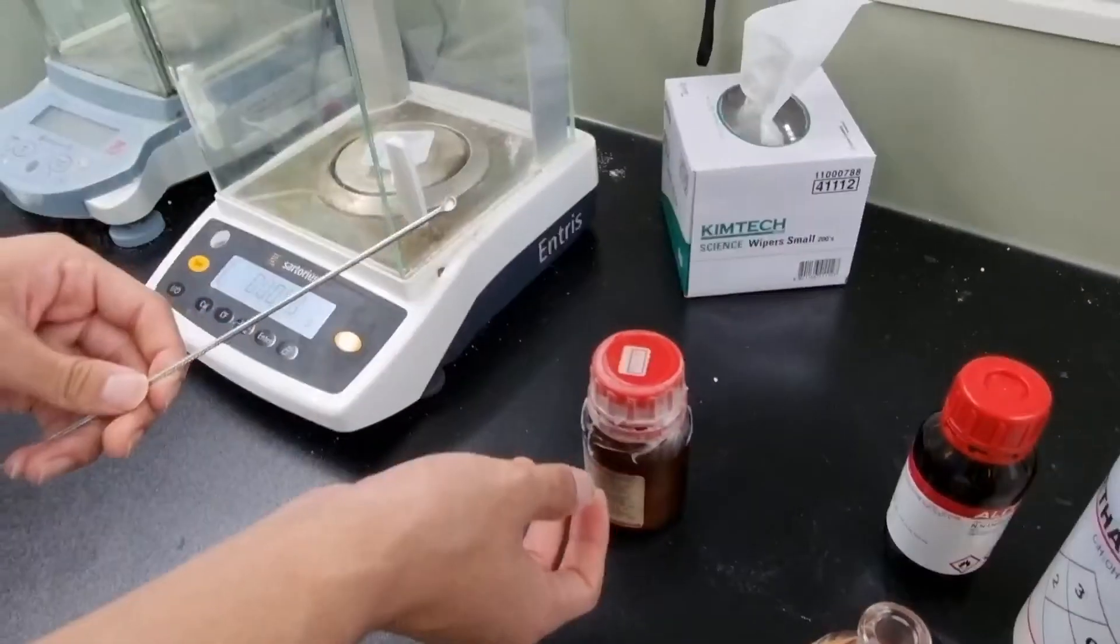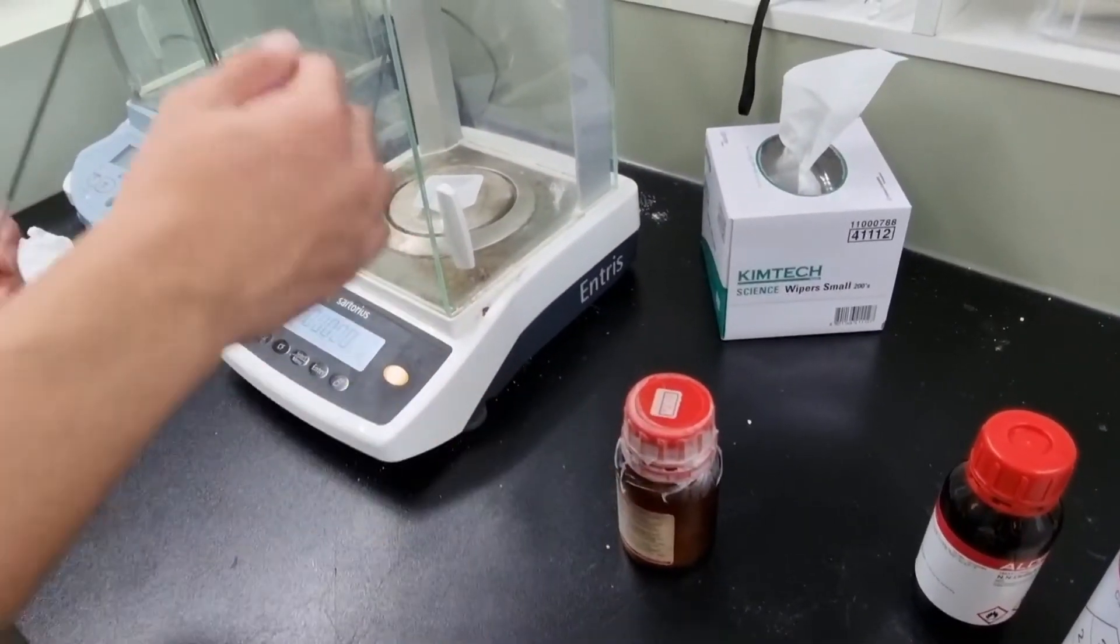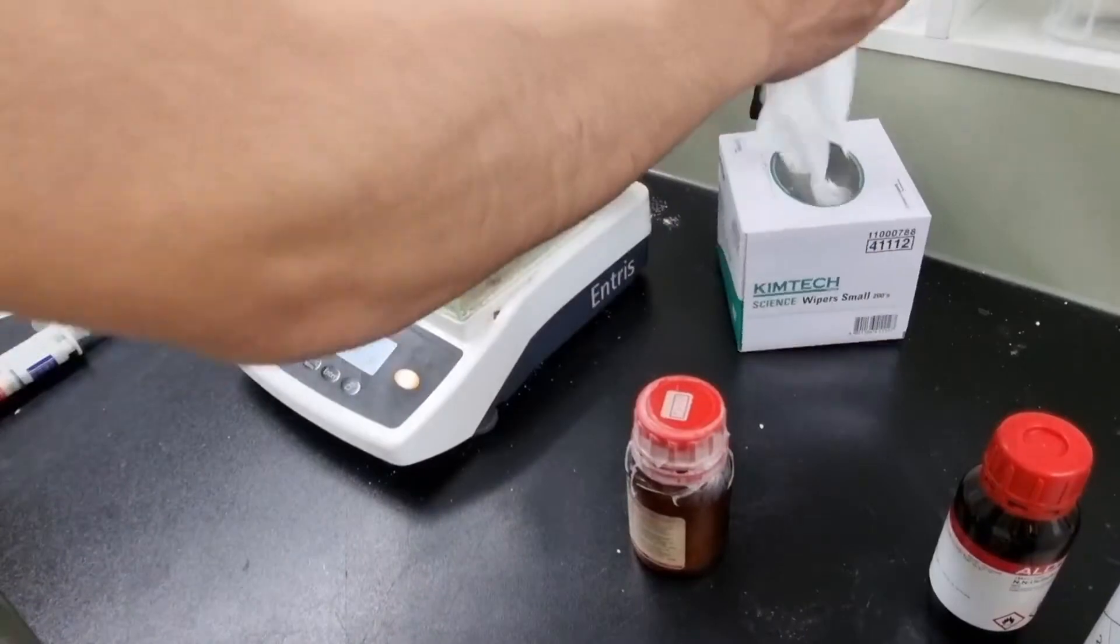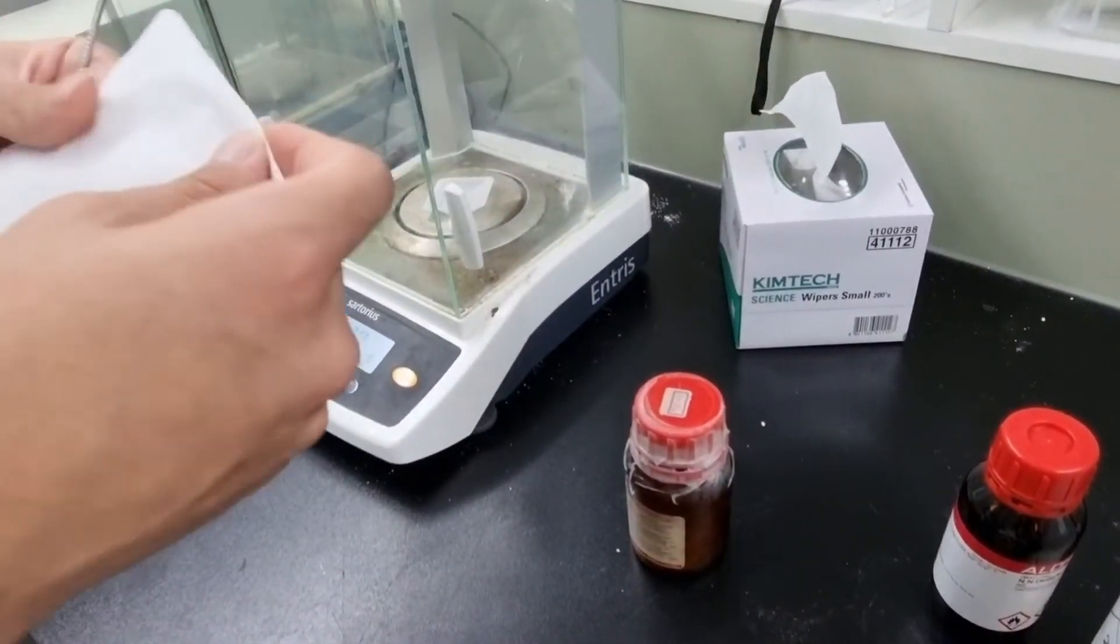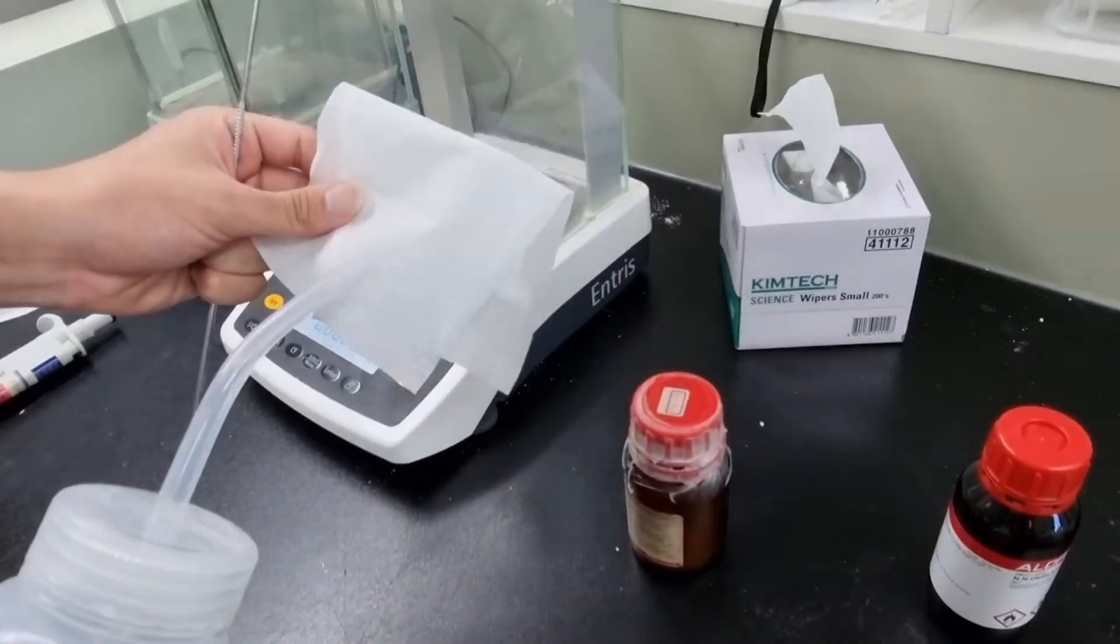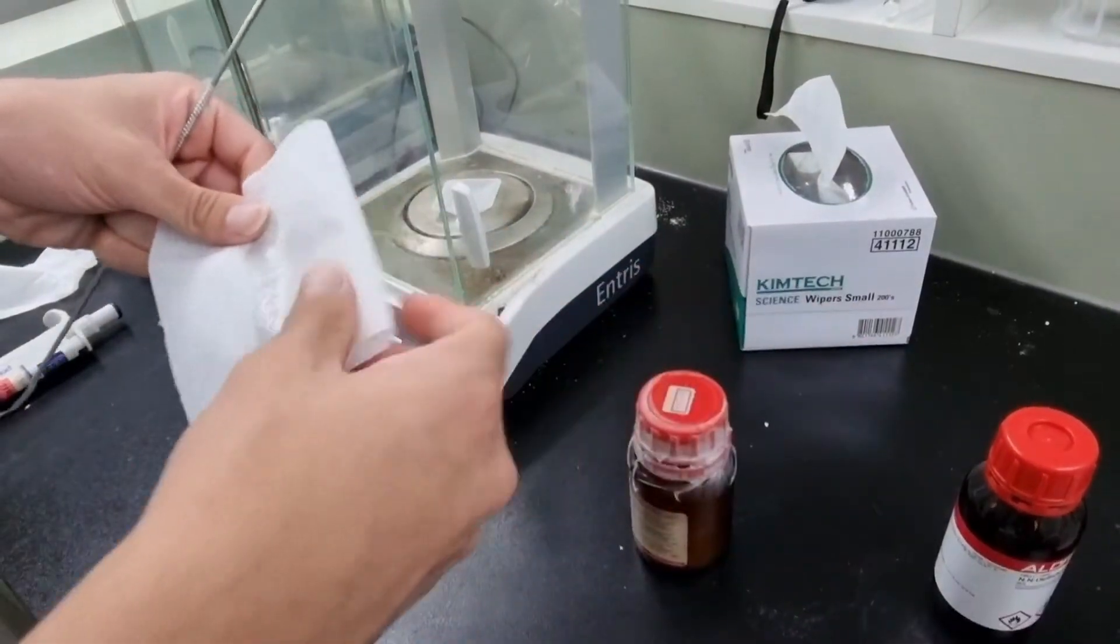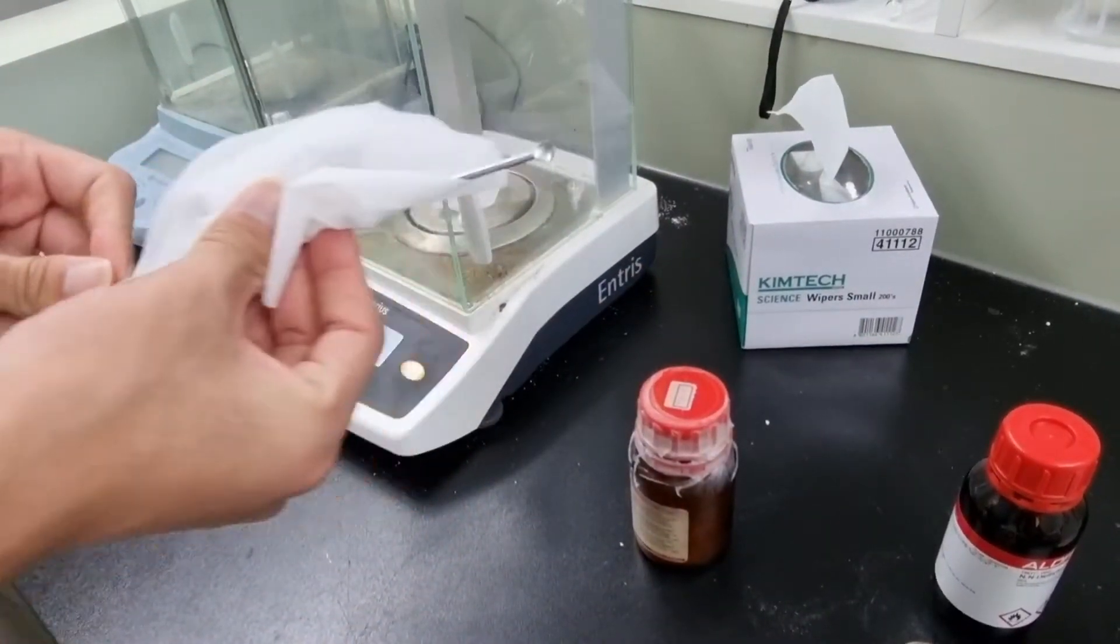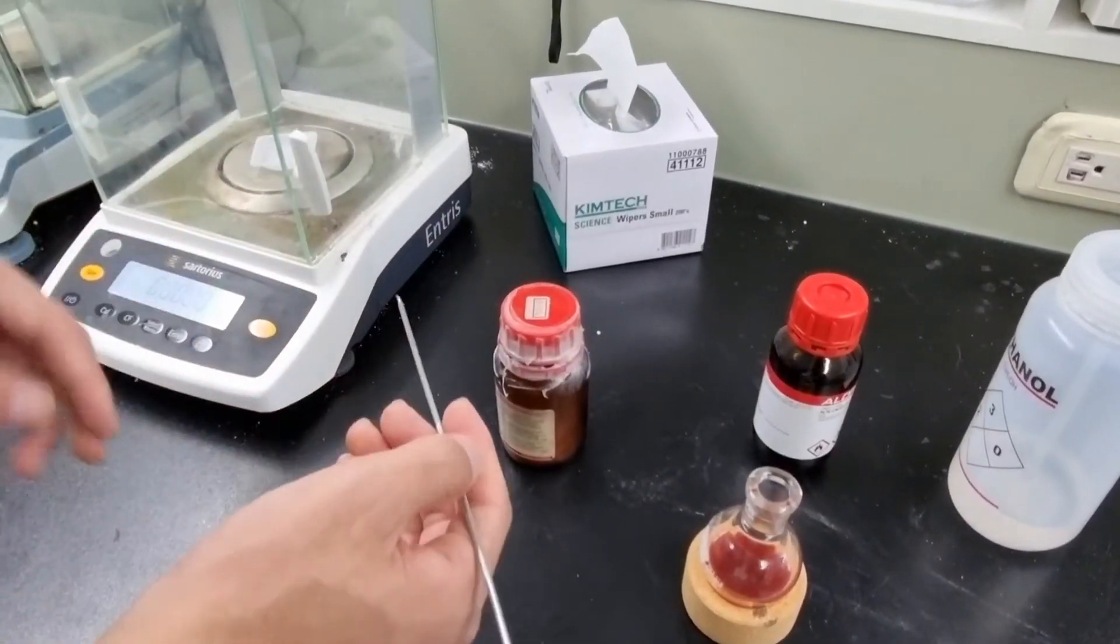So we use the spatula to scrape off the powder and put it on the weighing dish. But before that, you need to first sanitize the spatula with ethanol. After we clean this end of the spatula, we put the metal salt.